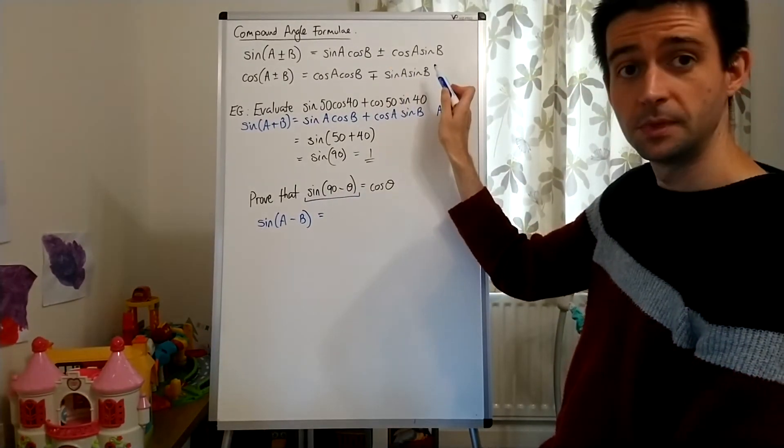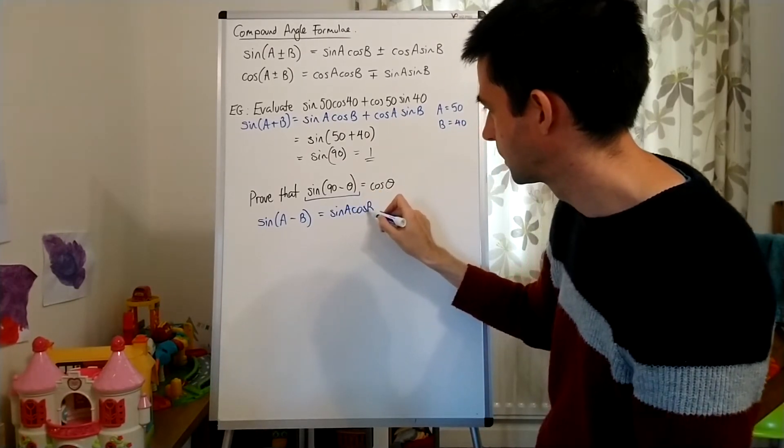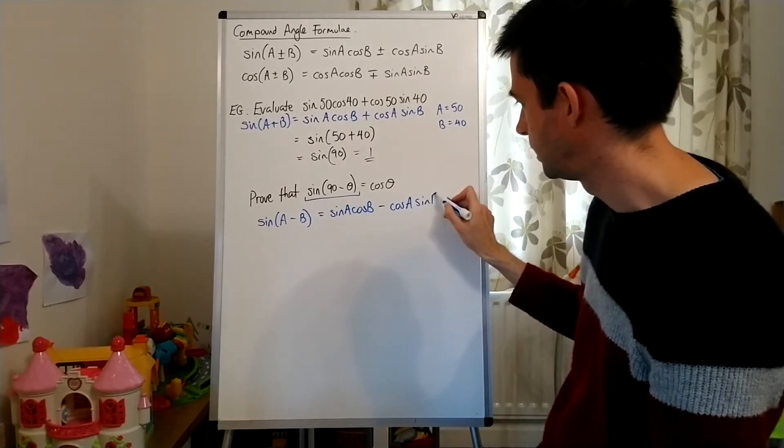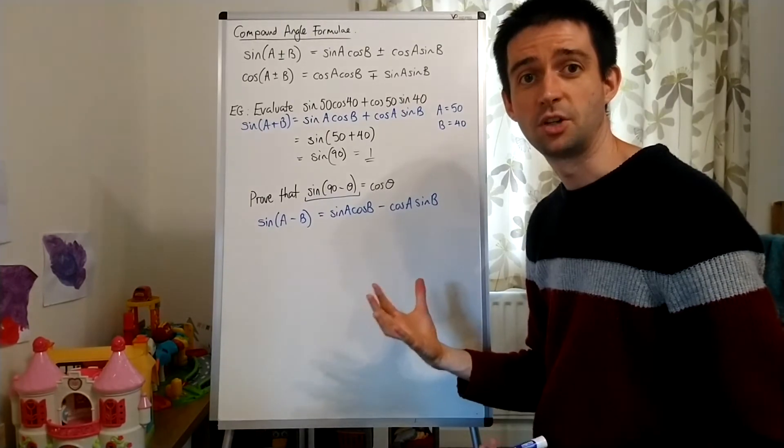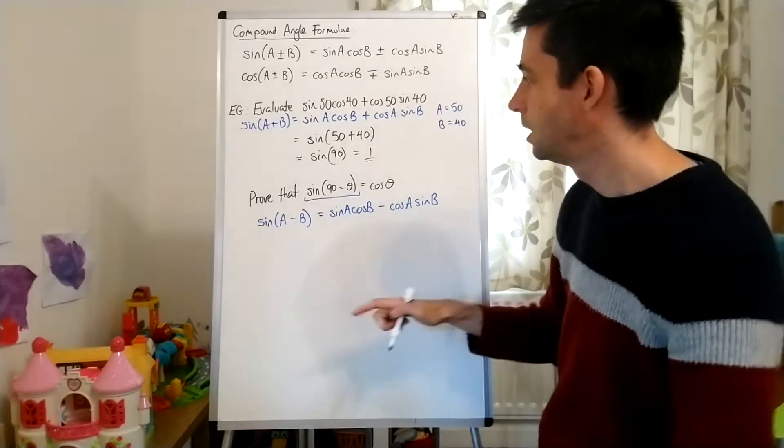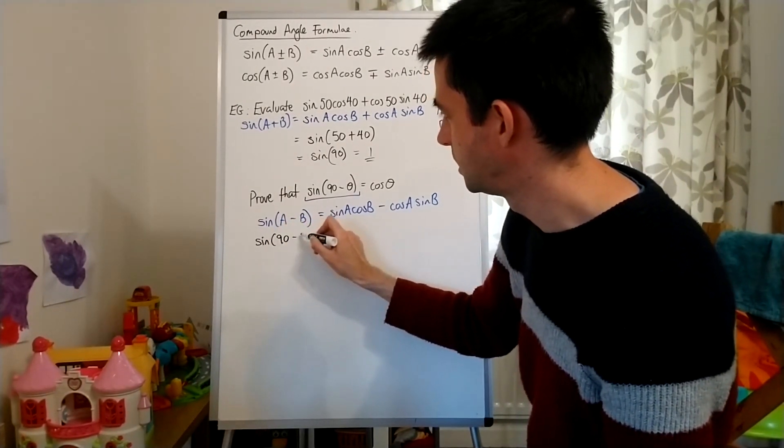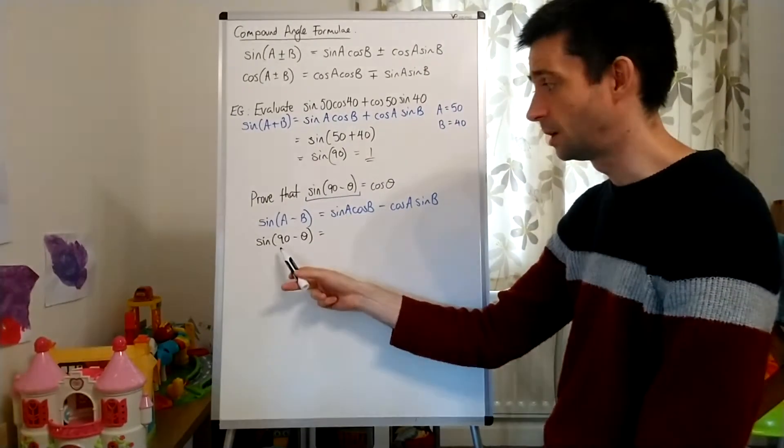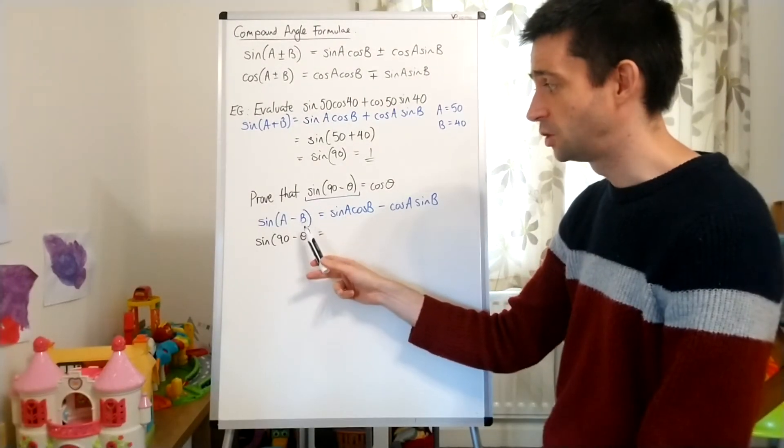So I'll just write that out from the expansion that I've given here. That would be sine A cos B minus cos A sine B. So that's identified to me that that is the expression that I'm using. That is the identity, I should say, that I'm using. So A minus B, sine of 90 minus theta. All I'm going to do is, wherever I see an A in the expansion, I'm going to write 90. And wherever I see a B in the expansion, I write theta.